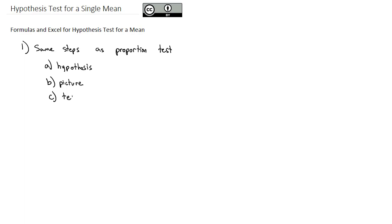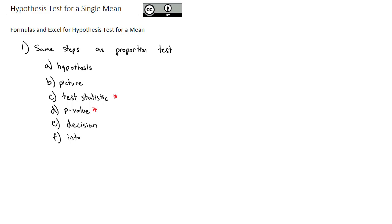After we have a picture, we'll calculate a test statistic, and from that test statistic we'll calculate a p-value. Those two formulas for the test statistic and p-value are going to be different than the formulas used with proportions. After we have a p-value, we compare it to alpha to make a decision. A small p-value results in rejecting the null hypothesis; a larger p-value results in failing to reject the null hypothesis. Then we interpret the decision in context of that alternate hypothesis test.